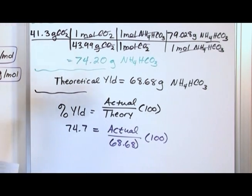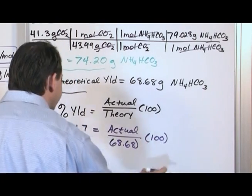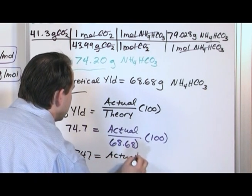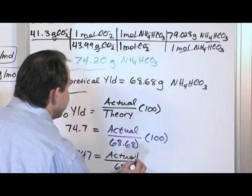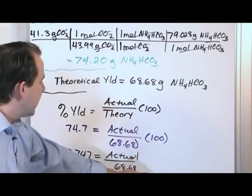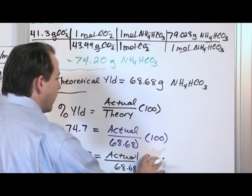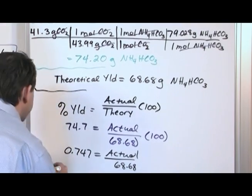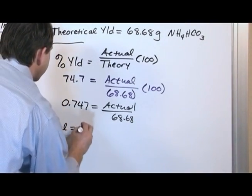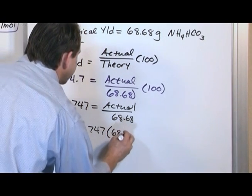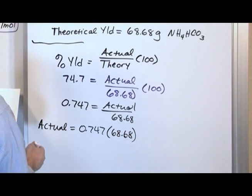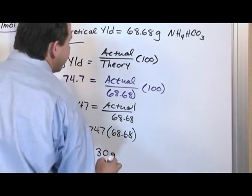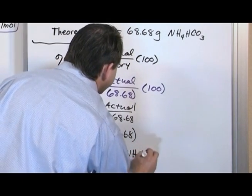Just do basic algebra step by step. First divide both sides by 100: 0.747 equals the actual divided by 68.68. To find the actual, multiply both sides by 68.68. So the actual equals 0.747 times 68.68, which gives us 51.30 grams of NH4HCO3. That is the final answer.